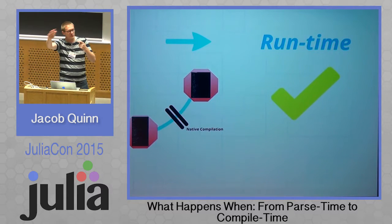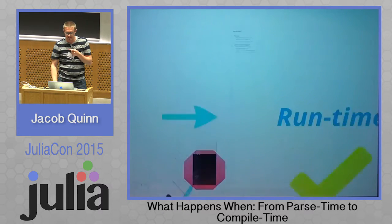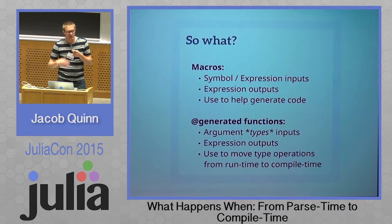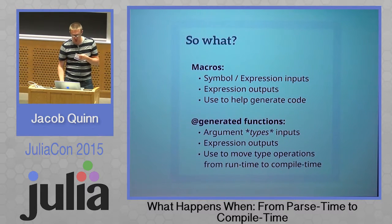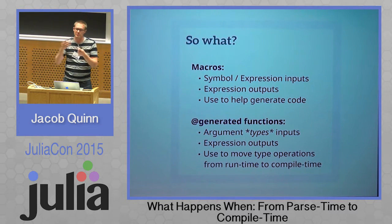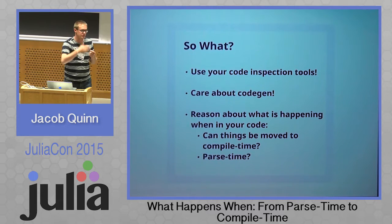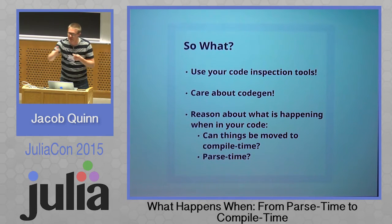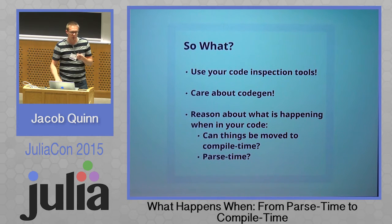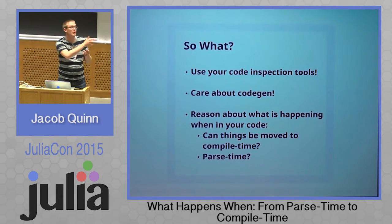I wanted to give a 50,000-foot view of the start of a method until when it gets run, and some of the tools available in between. The big takeaways: with macros, we operate on symbols and expressions and return those; with generator functions, we're operating on types and returning expressions; it's useful to move type operations from runtime to compile time. And the big takeaway for all of us as users is to use the code inspection tools. What other language provides this amount of insight into every stage of the process? You can zoom in on what's going wrong, and reason better about code — am I doing things at runtime that I could move to compile time or parse time?